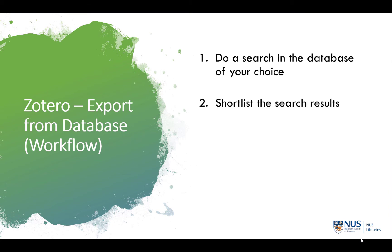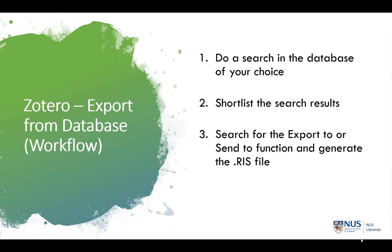Once you have done your search, shortlist your search results by clicking on the checkboxes adjacent to the search results you want. Once you have shortlisted the results you want, search for the Export To or Send To function. The name of the function and where it is located depends on the user interface of the database you are using. The database will then generate a .ris file, which you can then import into Zotero by double-clicking on it or importing it into Zotero by clicking File and then Import.